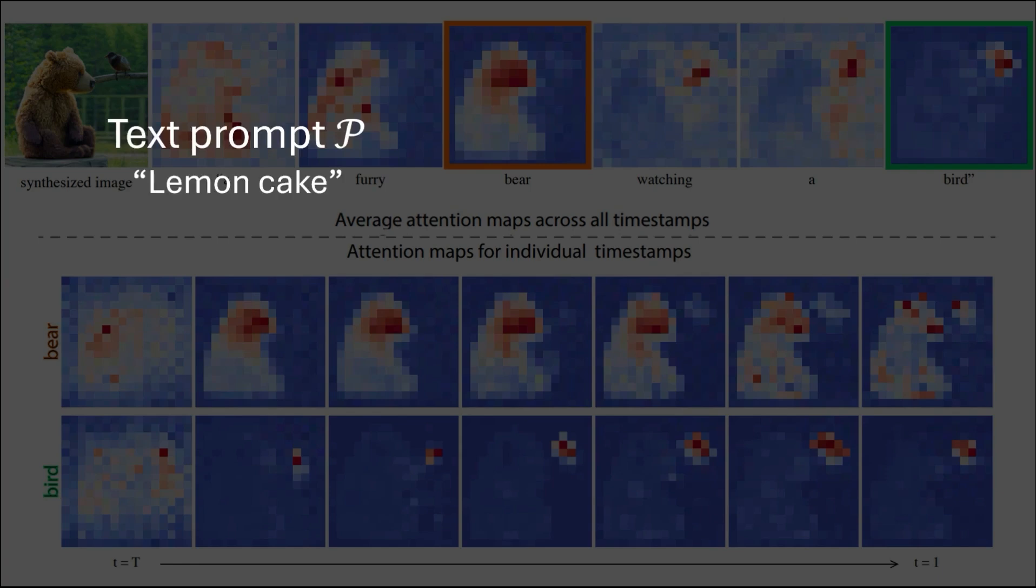Back to our problem: remember we have a text prompt P like 'a lemon cake' and we want to modify it to a new text prompt P star like 'chocolate cake.' Here comes the idea that since we want to preserve the structure of these concepts, let's focus on common words, in this case 'cake,' and copy-paste the cross attention map from the first one to the second one. Since cross attention maps are representing the structures, it makes sense that we're transferring the structure and forcing the generative model to have the same structure of the cake when generating the new image, while also the chocolate word adds the flavor of chocolate to the cake.